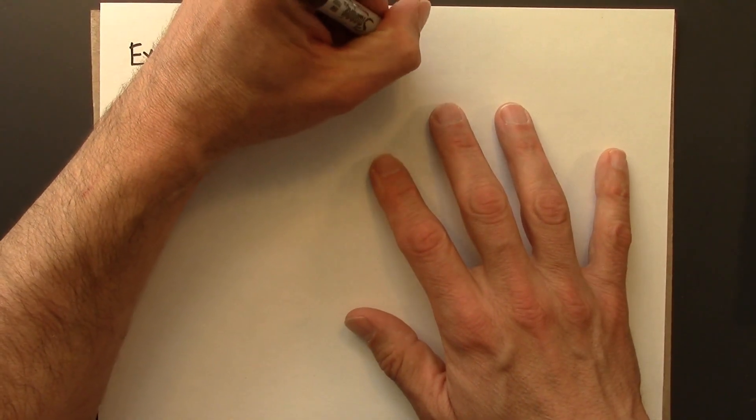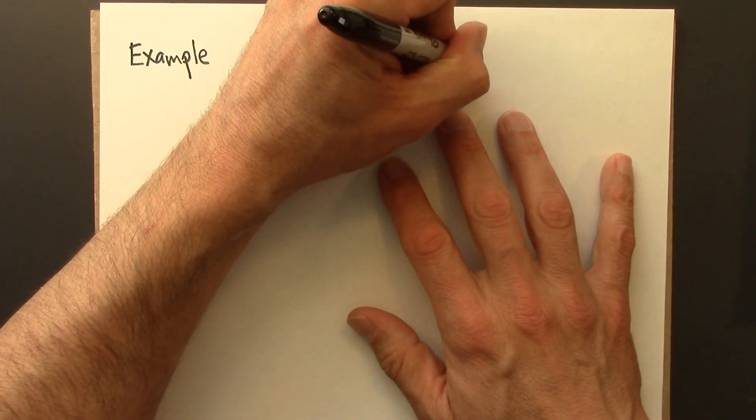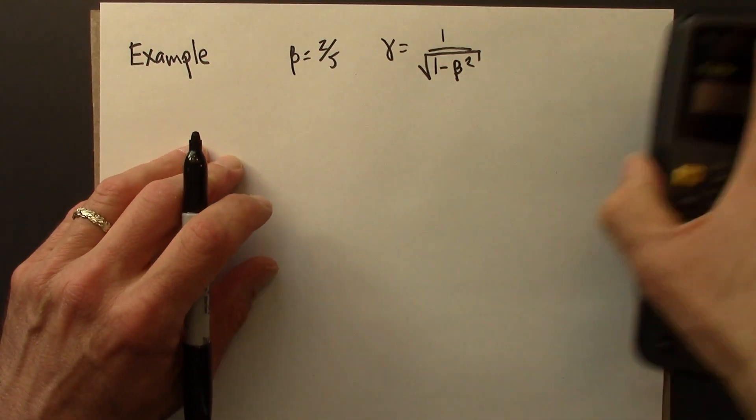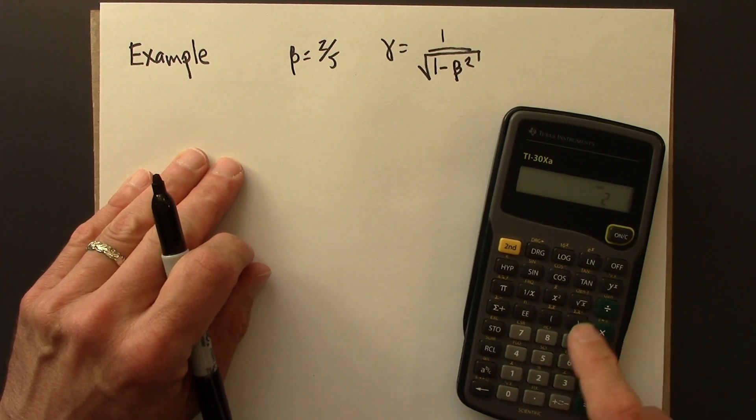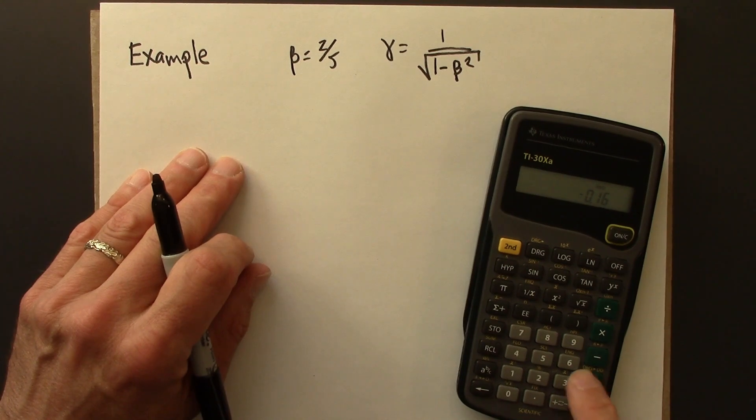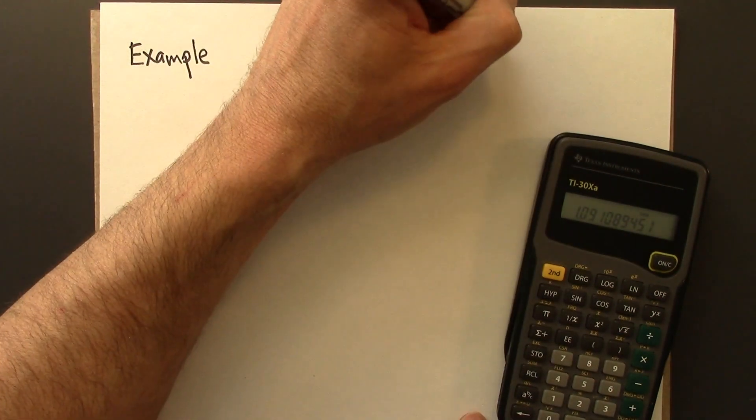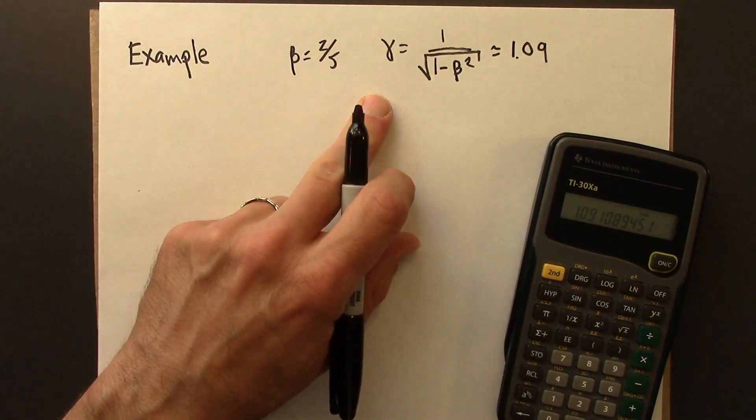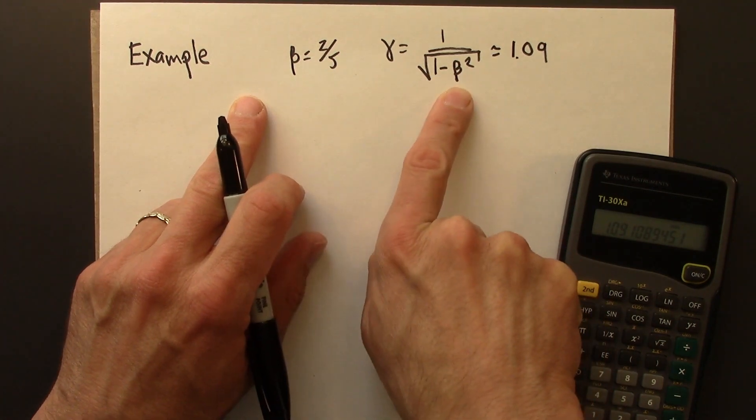And let me calculate gamma, because we're going to need that. That's 1 over the square root of 1 minus beta squared. And we've calculated this before. You can do it with fractions, but eventually you're going to need a calculator. Two-fifths, I'm going to square that, make that negative, add 1, square root, 1 over x. And I get around 1.09.